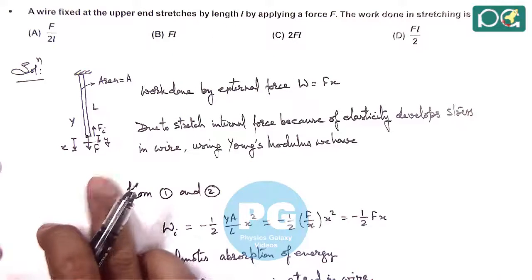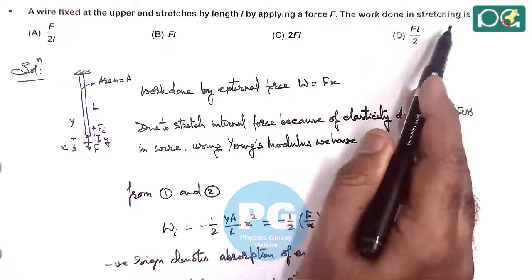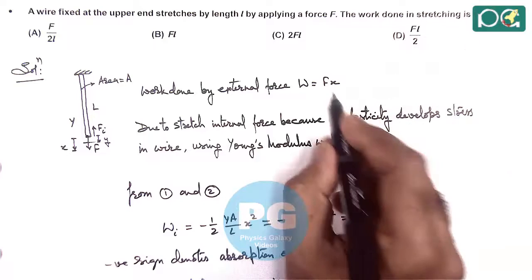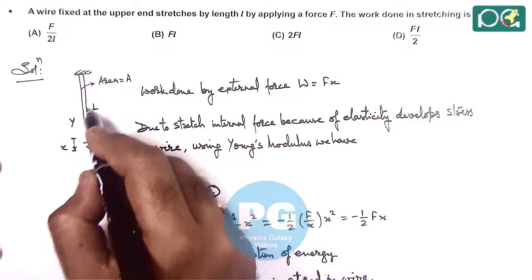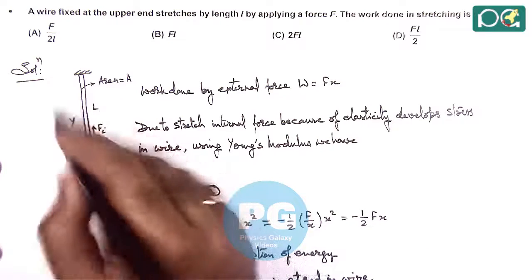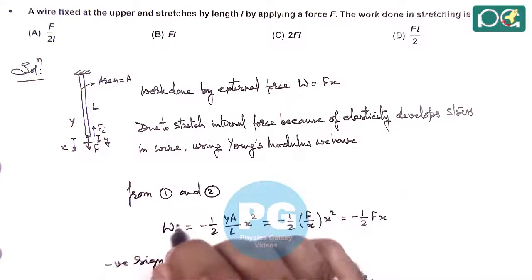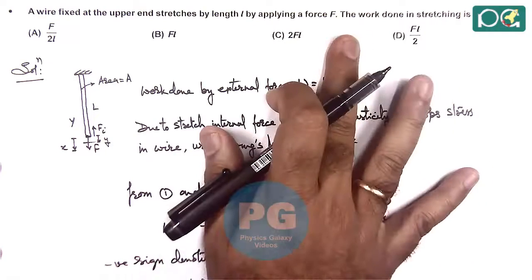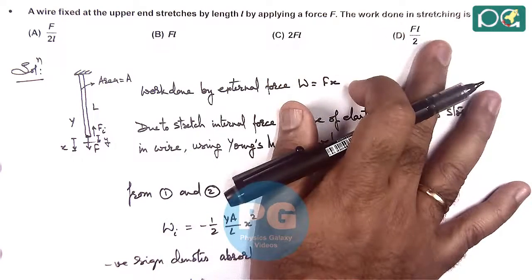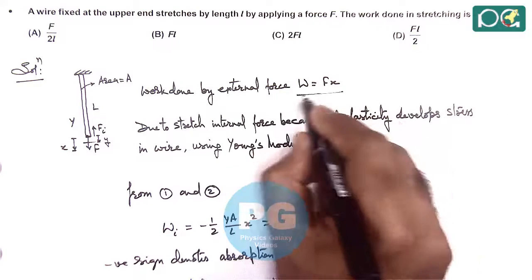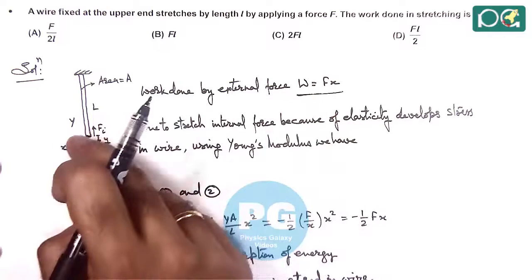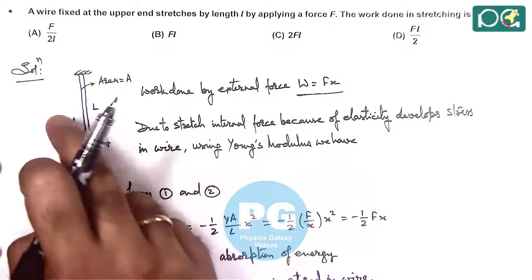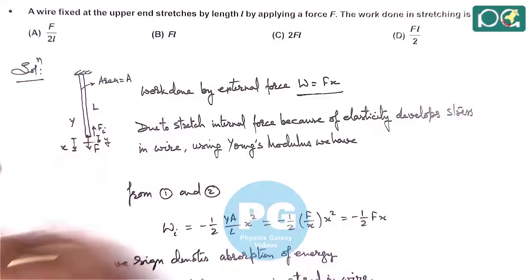We are required to find work done in stretching. For the external force, the answer should be FL. If we wish to calculate the energy stored in the wire, that should be FL/2. But if it is simply asking work done in stretching, we need to consider the work done by external force, which should be FX. However, if it is work done by the elastic forces, then it will be taken as FL/2.